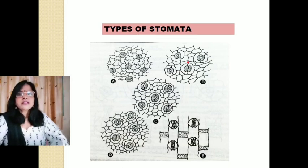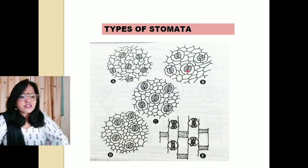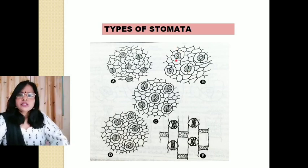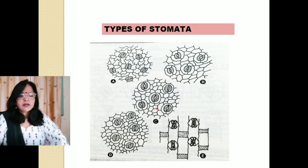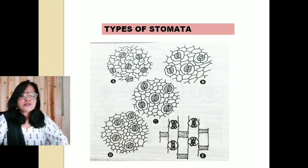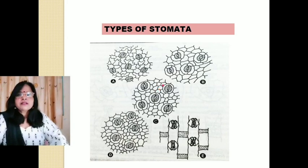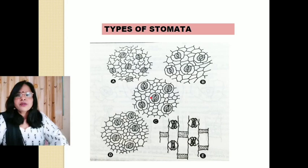In anisocytic stomata, two kidney-shaped guard cells are surrounded by three subsidiary cells, of which one is smaller than the other two. Number three is paracytic stomata, in which guard cells are surrounded by two subsidiary cells found at right angles to the long axis of the pore and guard cells.